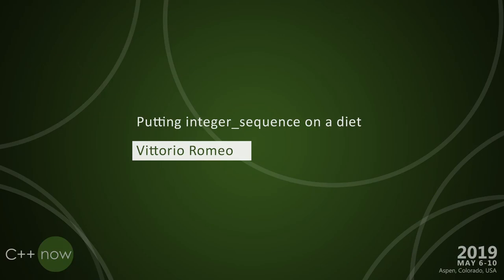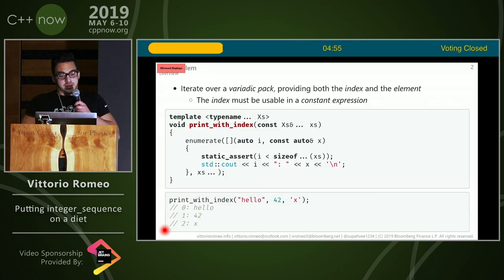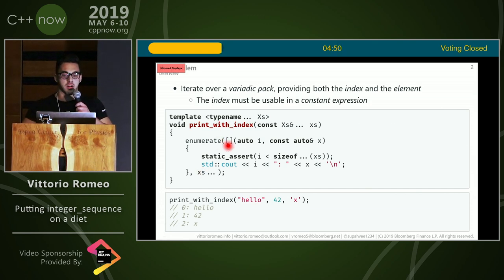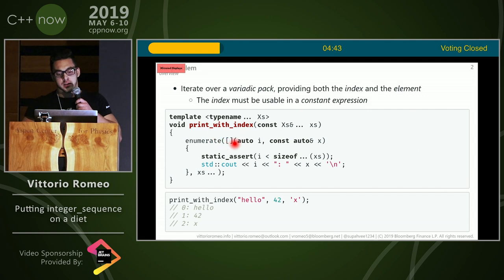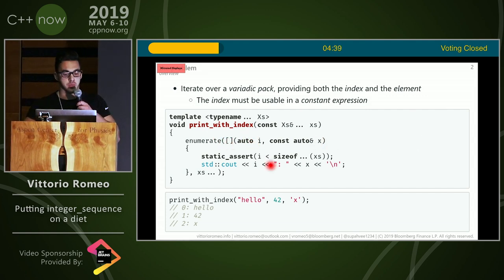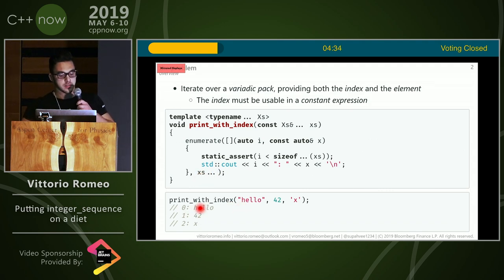This is a talk about integer sequences, and how we can make things easier and less boilerplate-heavy. Our problem is that we want to enumerate a variety pack of arguments and also have an index available at compile time. So we want to have this print with index — we call it enumerate — we get an integral_constant i and the x argument that's part of the pack by calling enumerate with xs. Then it will print out, for example, when we pass hello, 42, and x: the index and the thing.